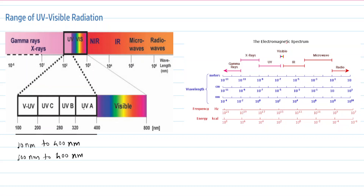The ultraviolet region is divided into two parts. The first part has ultraviolet radiation with wavelength below 200 nanometers. This part is called the far ultraviolet region, also called the vacuum ultraviolet region. This region is not useful for ultraviolet spectroscopy because all study has to be carried out in a vacuum. The region above 200 nanometers up to 400 nanometers is divided into the near and middle ultraviolet region.